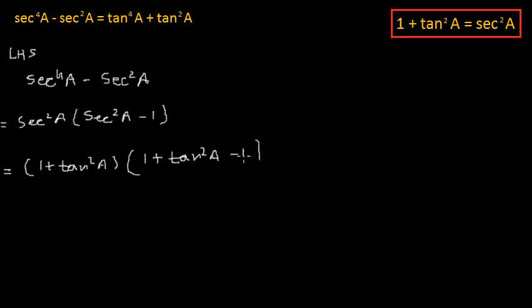This minus 1 and plus 1 will cancel each other, and we'll be left with (1 plus tan²a) multiplied by tan²a from the second bracket.